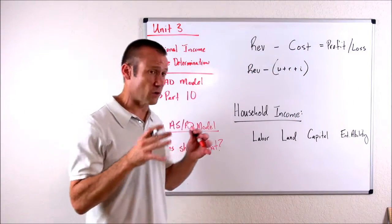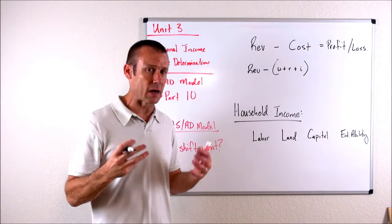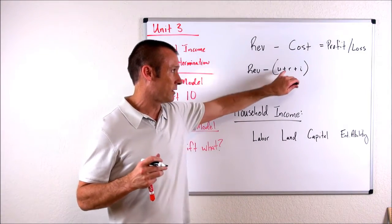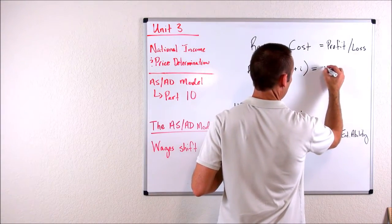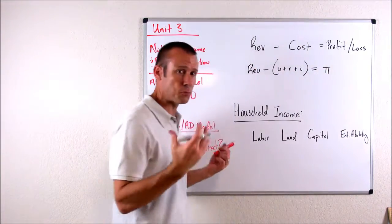Now there's some other things we could talk about, but those are the main costs from a macroeconomic standpoint to a business: wages, rent, and interest. And of course, I put a pi sign that means profit.